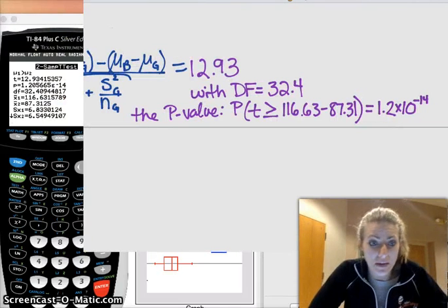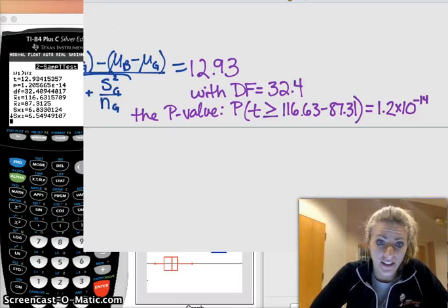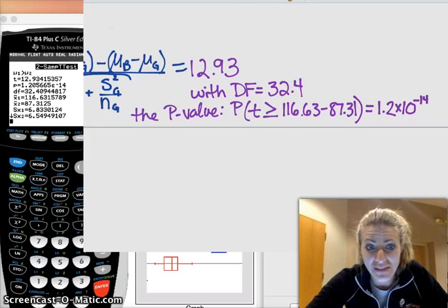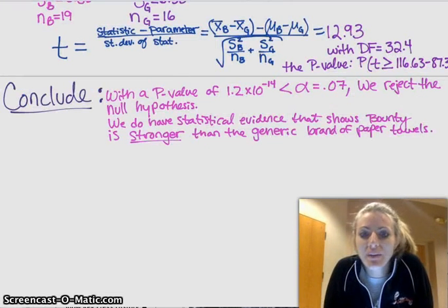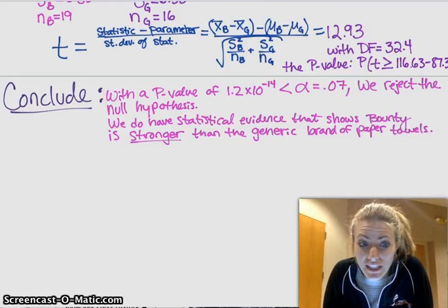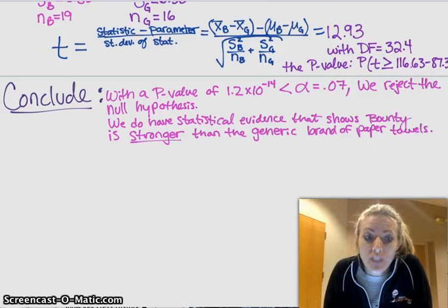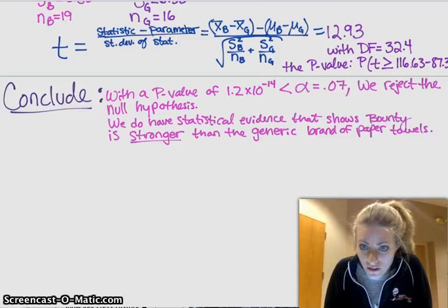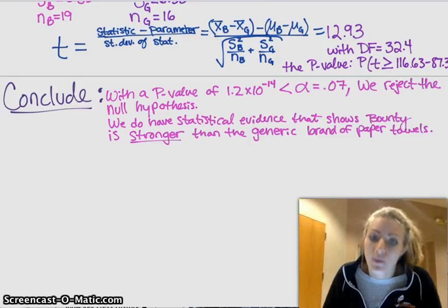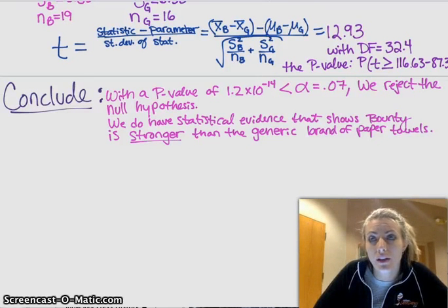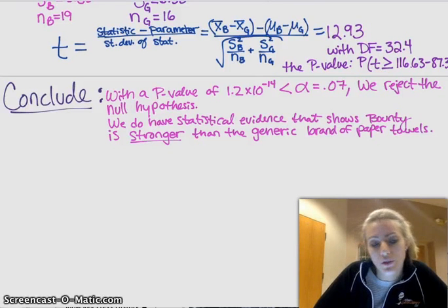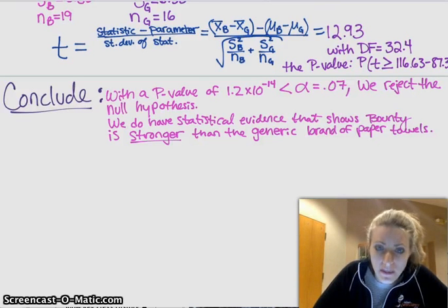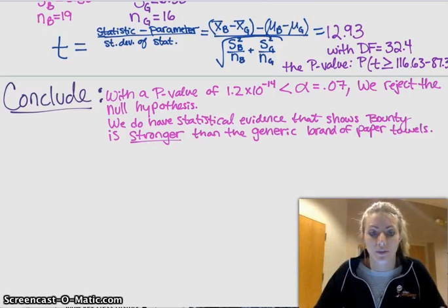So we add something like this to our do step and then we can pretty much conclude from here. And say the Bounty is pretty surely definitely better than the generic. And we conclude something like the following with a p value of 1.2 times 10 to the negative 14, which is less than our alpha, which was 0.07. We reject the null hypothesis. So that means that we do have statistical evidence and that shows that Bounty is stronger than the generic brand of paper towels. Be careful in your conclusion when you're comparing means, you always want to say, if you can, which one is better than the other or which one is higher than the other or which one is stronger than the other. So that you're actually making your conclusion real world and really in context.